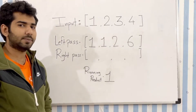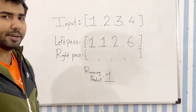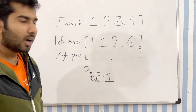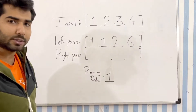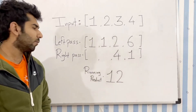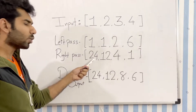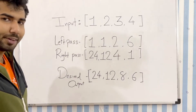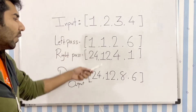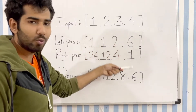Now we begin our right pass, starting from element 4. Just like we took the product of all left elements in the left pass, here we take the product of all right elements. The product of all elements to the right of 4 is 1, so we put the running product there and multiply 4 into it. Following the same pattern, we put the running product at 3, then multiply 3 in. Next we put 12 at index 1 and multiply 2 in. Finally, we put 24 at index 0. Multiplying the left and right pass arrays: 24×1=24, 12×1=12, 4×2=8, 6×1=6 — giving us the desired output.